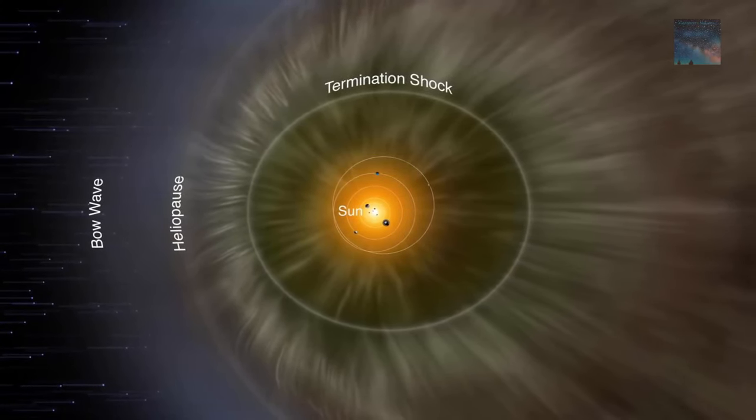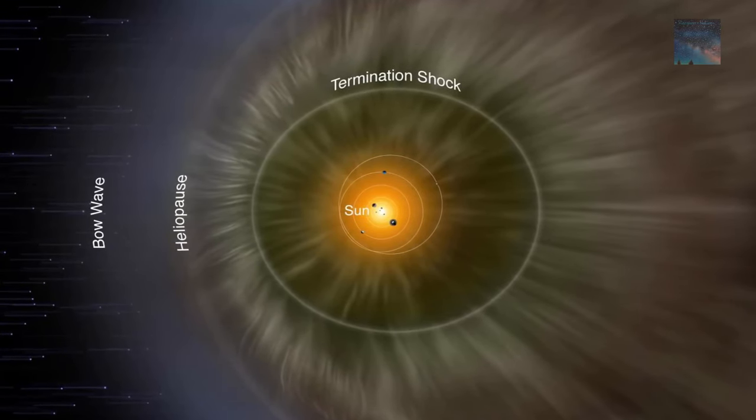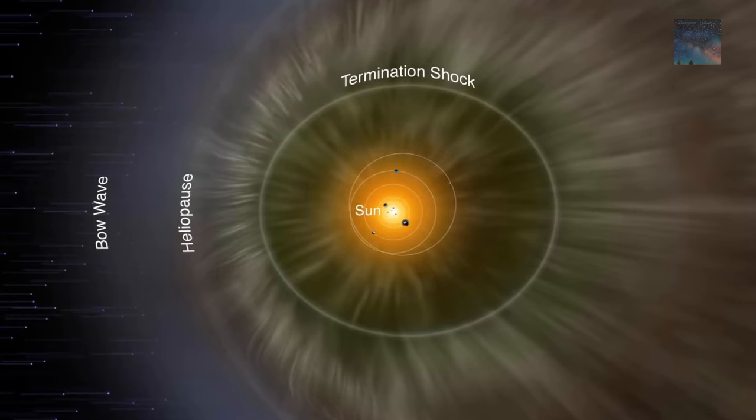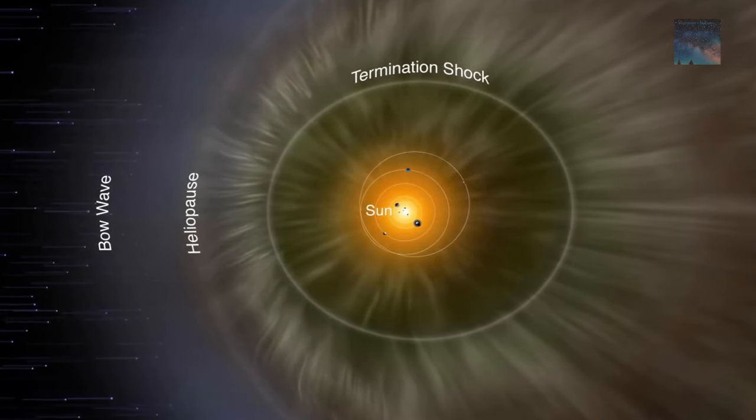Using computer models, the team simulated an entire heliosphere, jolted it with a solar wind pressure increase, and let it run the numbers. The simulation completed a story only hinted at by the data.